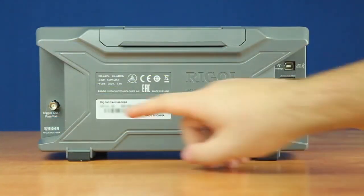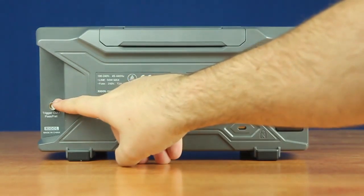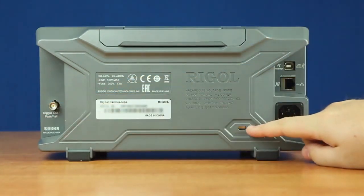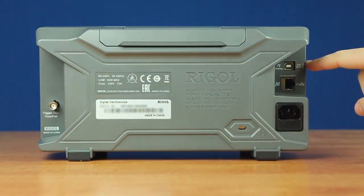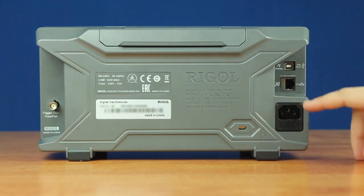On the back panel of the instrument we have our trigger out and pass fail out over here, then we have our computer lock here, followed by a USB port and LXI port, and then finally our power port.